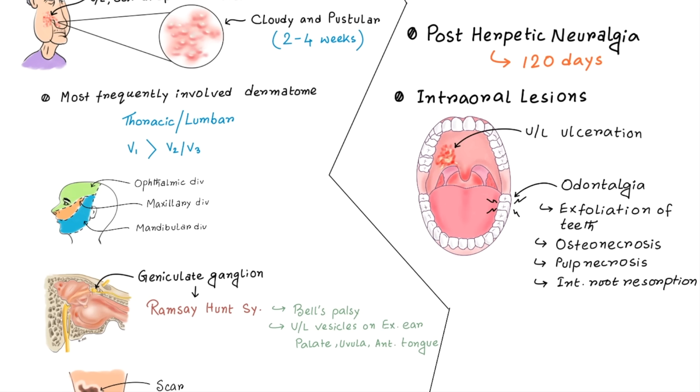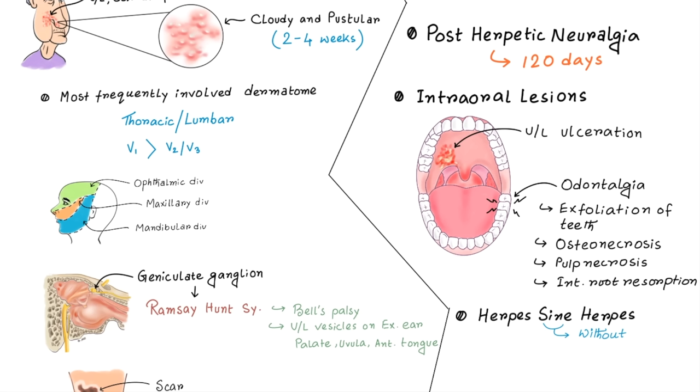Here I would like to mention an interesting point that herpes zoster sometimes appears without typical vesicular eruption. Patient presents only with unilateral burning pain sensation, it is really difficult to diagnose. This special form is called Herpes Sine Herpete, Sine means without. Sometimes ciliary ganglion involvement may cause Argyle Robertson pupil.